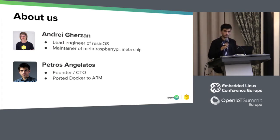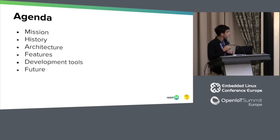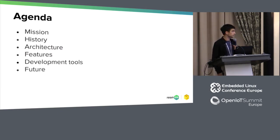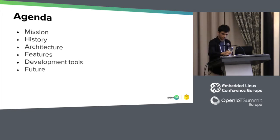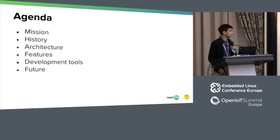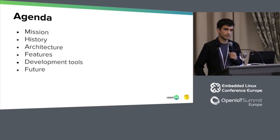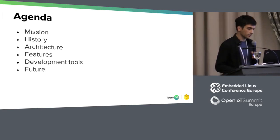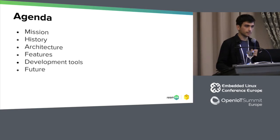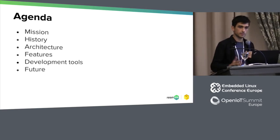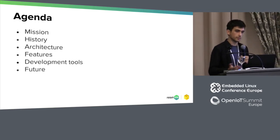I was involved with the original work of porting Docker to ARM. Today we'll talk about our mission and why we built an operating system, some history, the architecture of our operating system, some notable features we implemented, and development tools that a developer can use for developing on Resin OS with containers, and how we see the future of that operating system. All these slides will be uploaded, and we have GitHub links all over the slides pointing you to the right repos for each component.